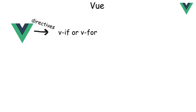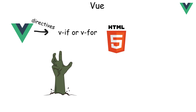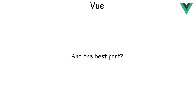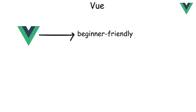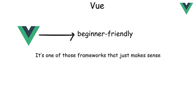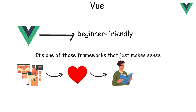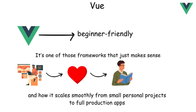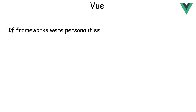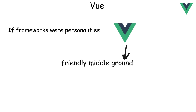Vue also uses directives like v-if or v-for that make your HTML feel alive and smart. Best of all, Vue is beginner-friendly — it's one of those frameworks that just makes sense. Developers love how readable it is and how it scales smoothly from small personal projects to full production apps. If frameworks were personalities, Vue is the friendly middle ground: simple, approachable, but still powerful.